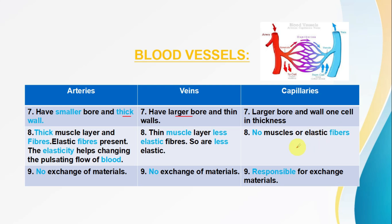Capillaries are small in size but form a dense network throughout the body. Regarding exchange of materials: there is no exchange of materials in arteries — they simply transport oxygenated blood. There is no exchange in veins either — they transport deoxygenated blood. But capillaries are responsible for the exchange of materials between blood and tissues.